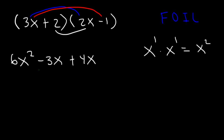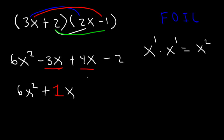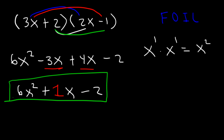And then finally, we can multiply the last terms — the 2 and the negative 1 — that's going to be negative 2. Now on your next step, you need to add like terms. Negative 3x and 4x are like terms. Negative 3 plus 4 is positive 1. So therefore, the answer is going to be 6x squared plus 1x minus 2. And this is the solution. So that's how you can FOIL or multiply two binomials.